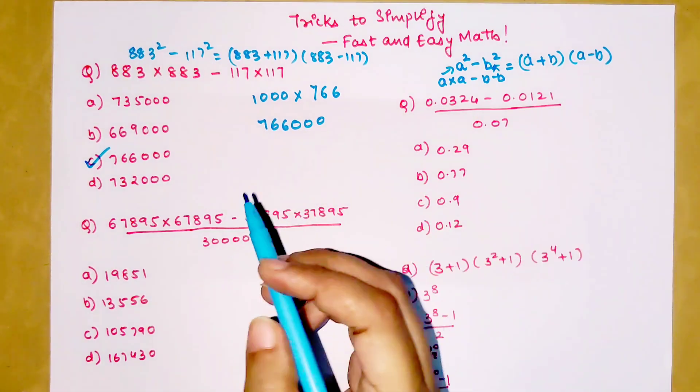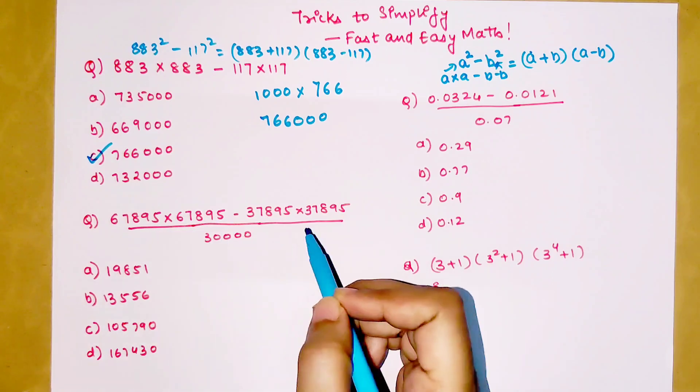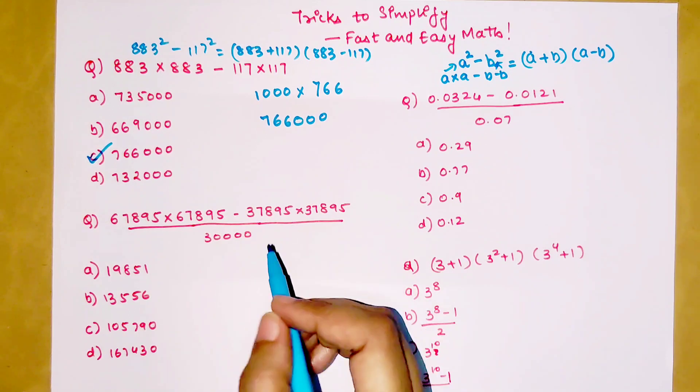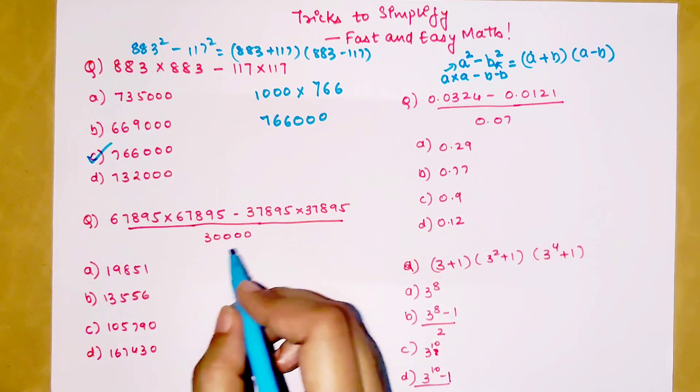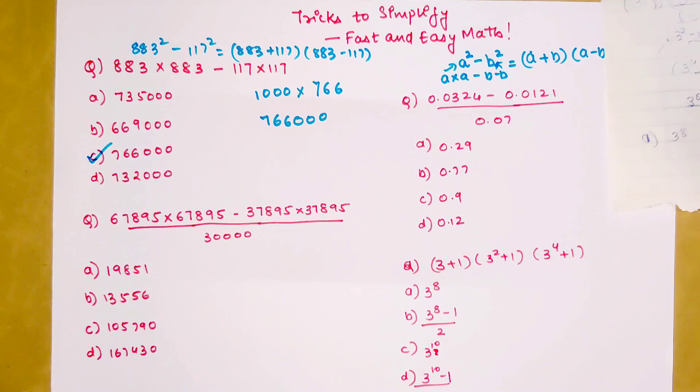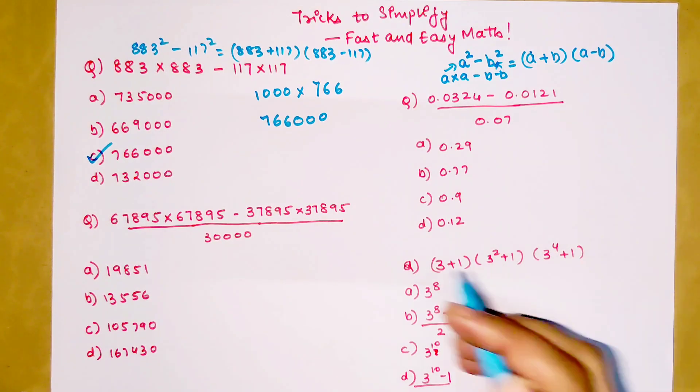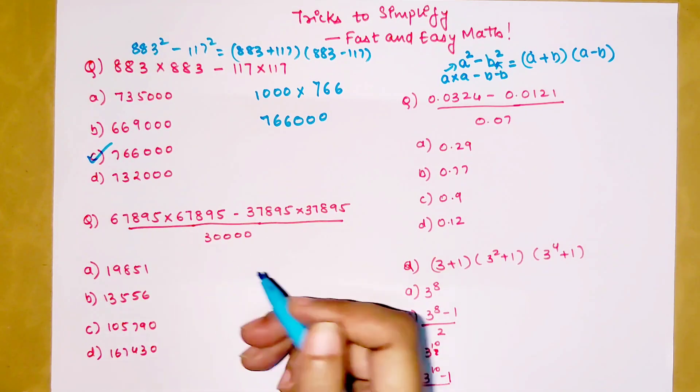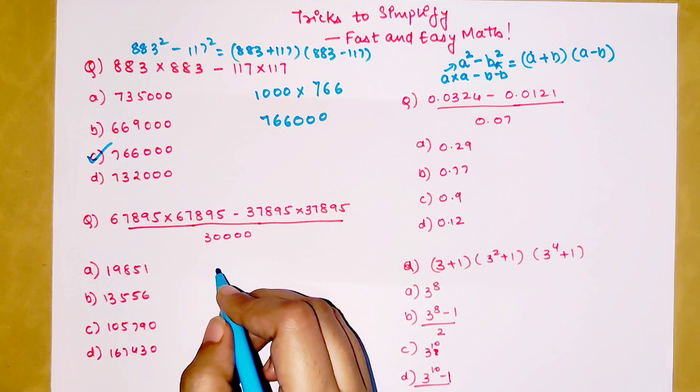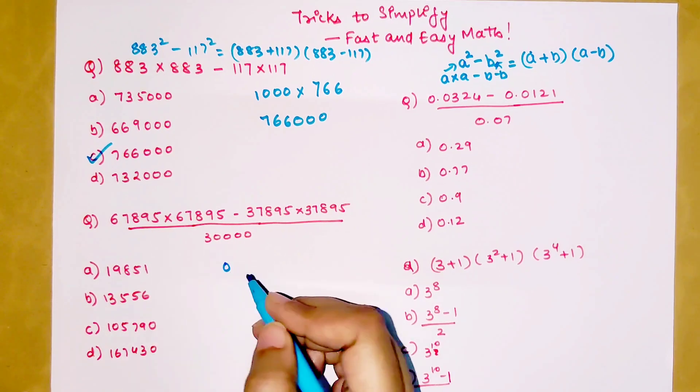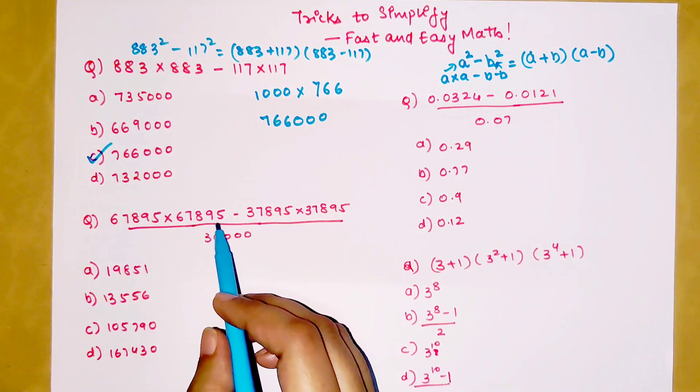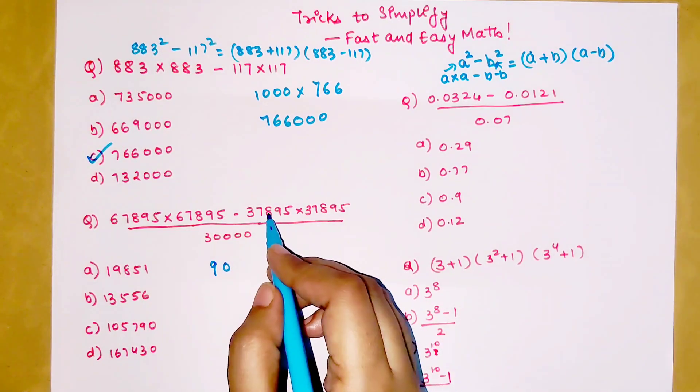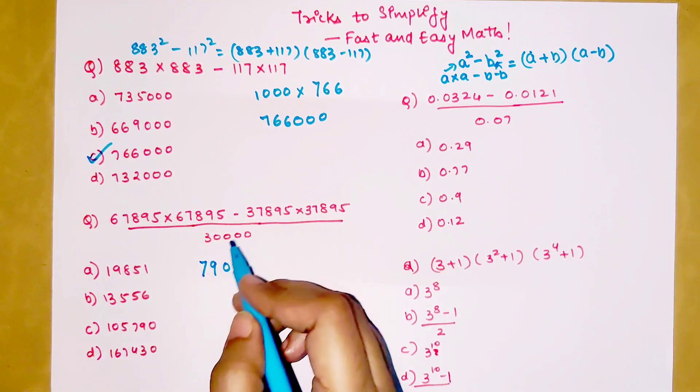Now again this is of the form a² - b² divided by 30,000. So simply, let's very quickly do this. When you add 67895 with 37895, you are left with 0, then 9 + 9 is 18 with one carry.